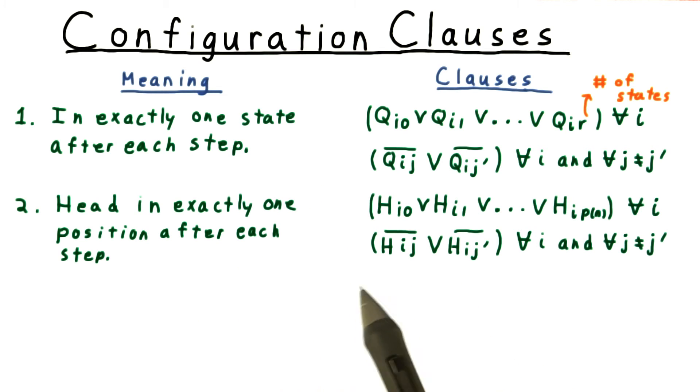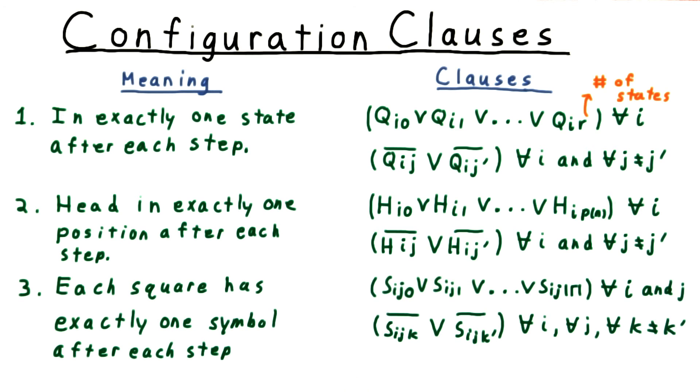For the position of the head, we have a similar set of clauses. The head has to be over some square on the tape, but it can't be in two places at once.